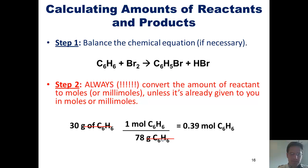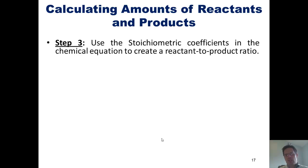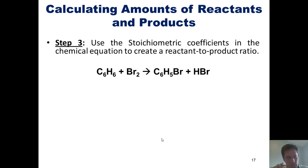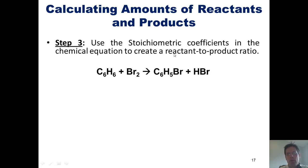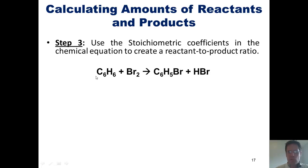We have now finished step two. In step three, we use the stoichiometric coefficients in the chemical equation to create a reactant to product ratio. We look at the balanced chemical equation and think about it. If I started with one mole of benzene, how many moles of bromobenzene would I get? They're present in a one-to-one ratio, so I'd get one. Two moles of benzene gives two moles of bromobenzene. Even 65 jillion moles of benzene would give 65 jillion moles of bromobenzene.